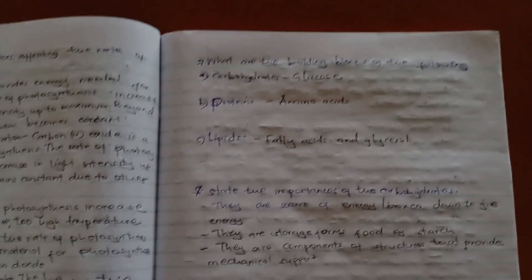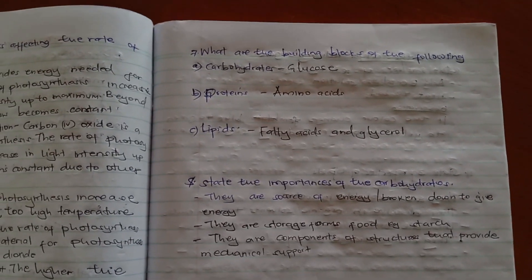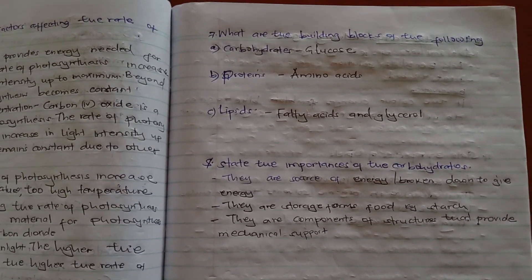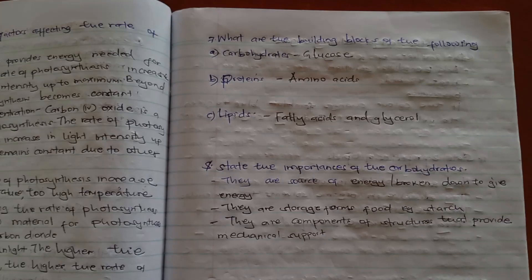What are the building blocks of the following? Carbohydrates, the building blocks is glucose. Proteins, it's amino acid. Lipids, fatty acid and glycerol.